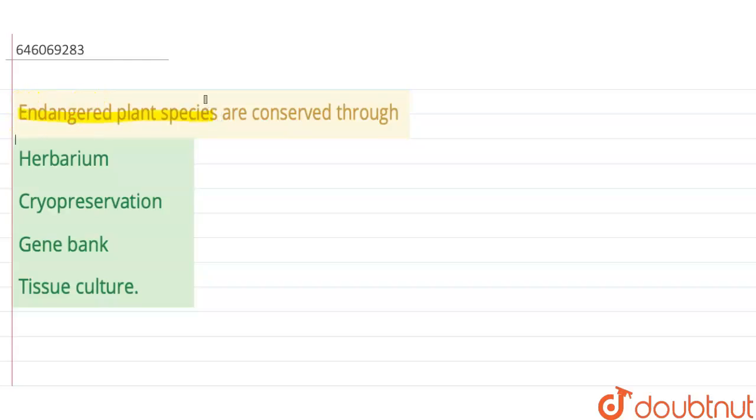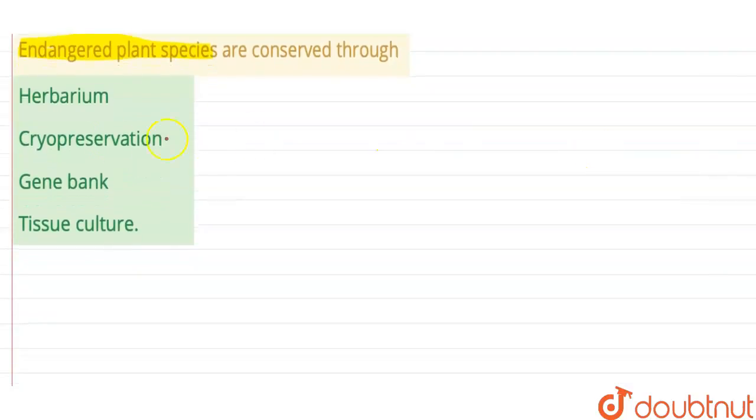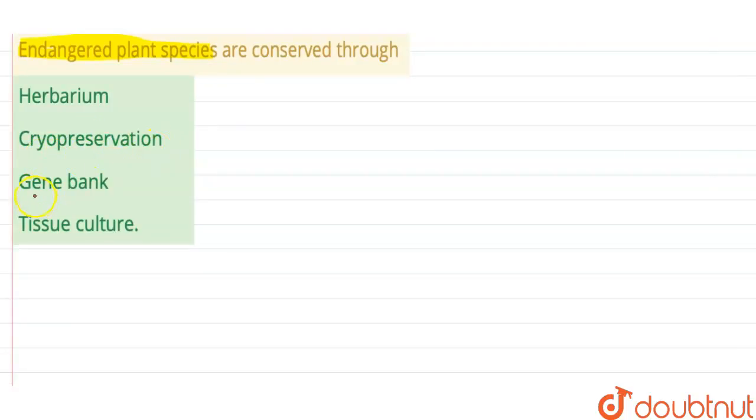Here we have to discuss that out of the following, through which the endangered plant species are conserved. The options are: herbarium, second cryopreservation, third is gene bank, and fourth is tissue culture.